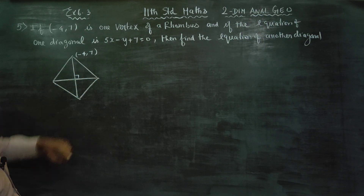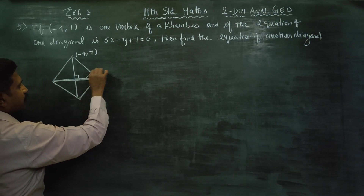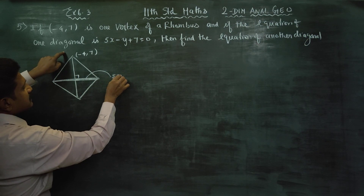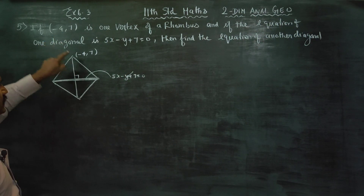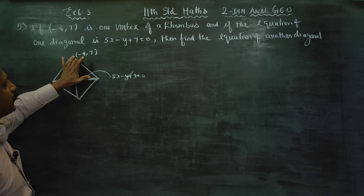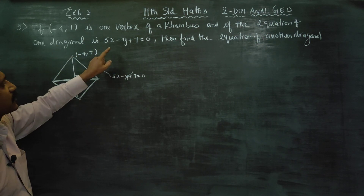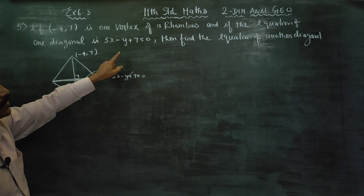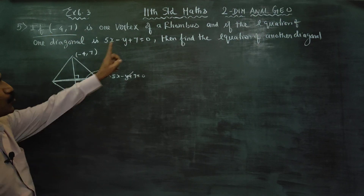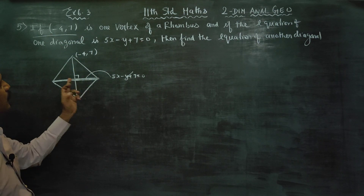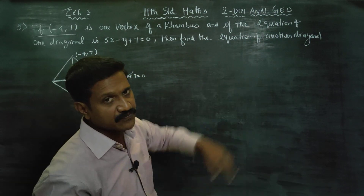And if the equation of one diagonal is 5x minus y plus 7 is equal to 0. Find the equation of another diagonal.